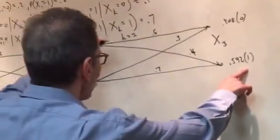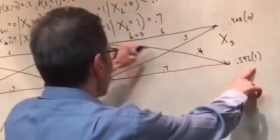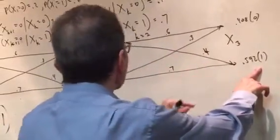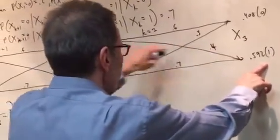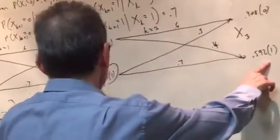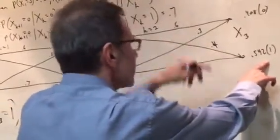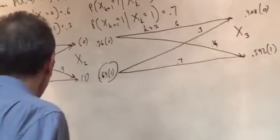We can see that we have two paths to get to a 1, the diagonal and straight across. We have a 0.36 here times 0.4 plus 0.64 here times 0.7 will give us 0.592. Let's prove that out.